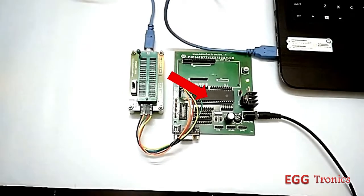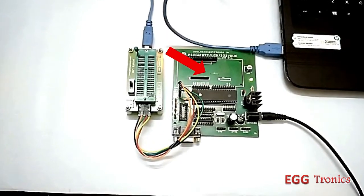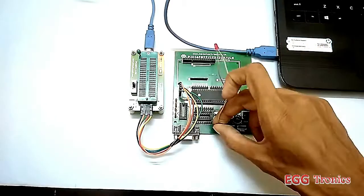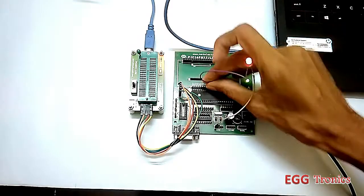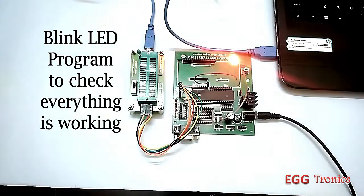Before connecting the sensor and the display, first we have to make sure that the programmer, the chip, and the project board are working properly. To do this we can just connect an LED and download a blink LED program. And as you can see, it's working fine.